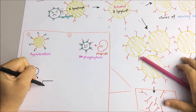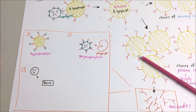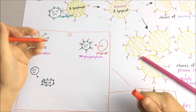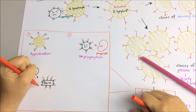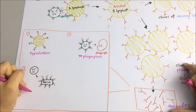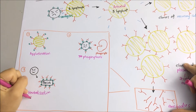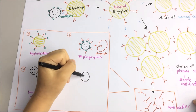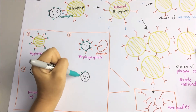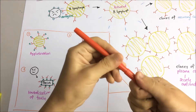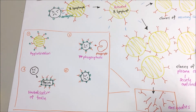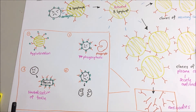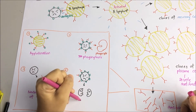Antibodies can also bind to the toxins produced by microorganisms and neutralize them, preventing the toxins from binding with cells and causing damage — this is known as neutralization. Last but not least, antibodies can bind to antigens and cause the pathogen to rupture — and this is known as lysis.